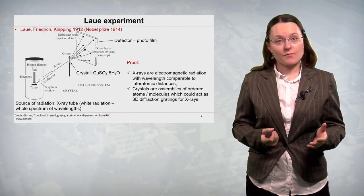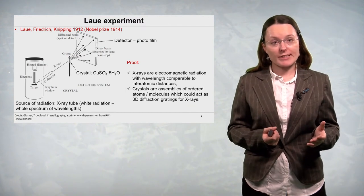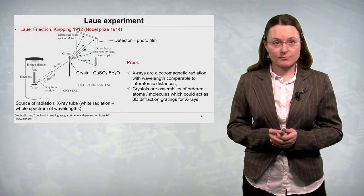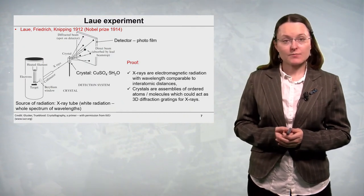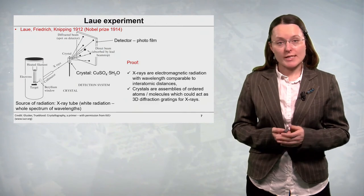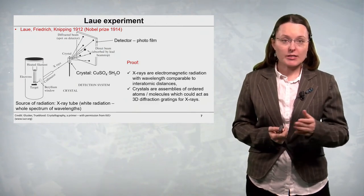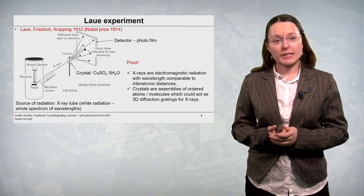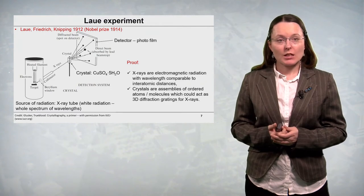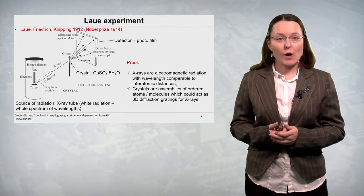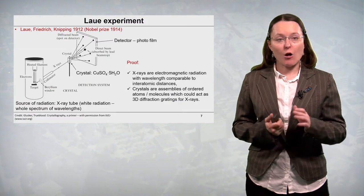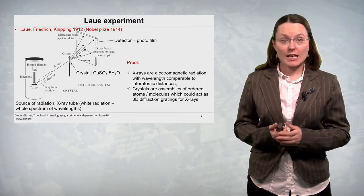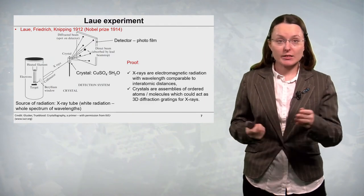So the first historical X-ray diffraction experiment on a crystal was performed by Laue in 1912. In this experiment, the diffracting crystal was a simple inorganic salt, copper sulphate pentahydrate. X-rays were obtained with an X-ray tube which produced white radiation, which means radiation with the whole spectrum of wavelengths, not a monochromatic one. This radiation got scattered on the crystal.